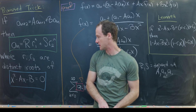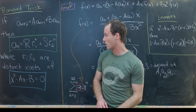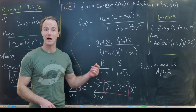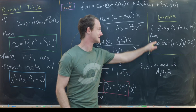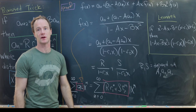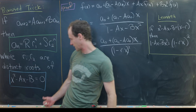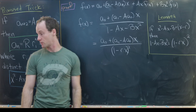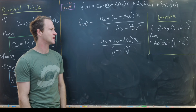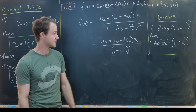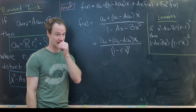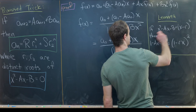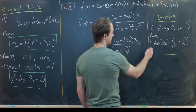Now we want to see what happens when we have repeated roots — when r₁ and r₂ are equal, both equal to some value r. The following lemma follows from the previous one for the case of non-distinct roots: if x² - Ax - B factors as (x - r)², then 1 - Ax - Bx² factors as (1 - rx)².